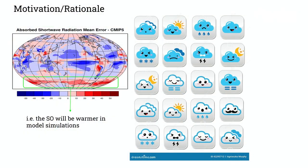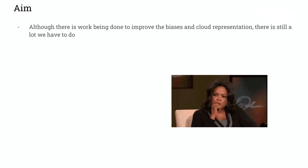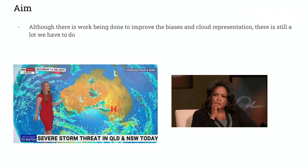The scientific community has been very interested in finding out why we are getting a warmer Southern Ocean in the models, and the reason is cloud representation. There are so many different types of clouds and it's really difficult to represent each of them. In the latest generation of climate models, great efforts were made to improve cloud representation, but low-level clouds still have some issues. We also found that there are no comprehensive studies of cloud and precipitation processes in the Southern Ocean stratified by weather patterns.